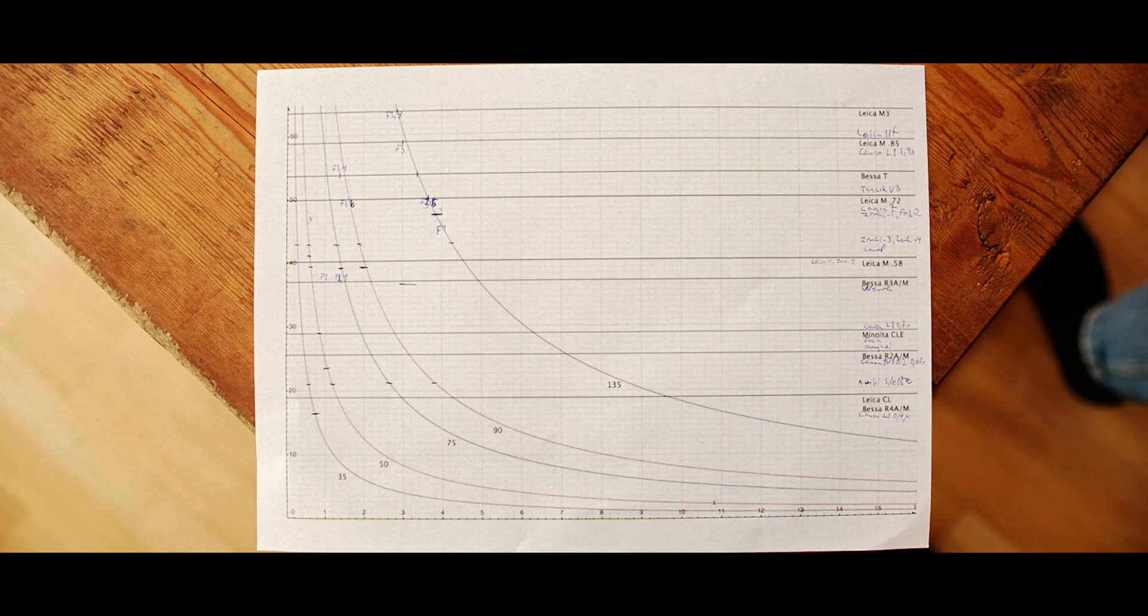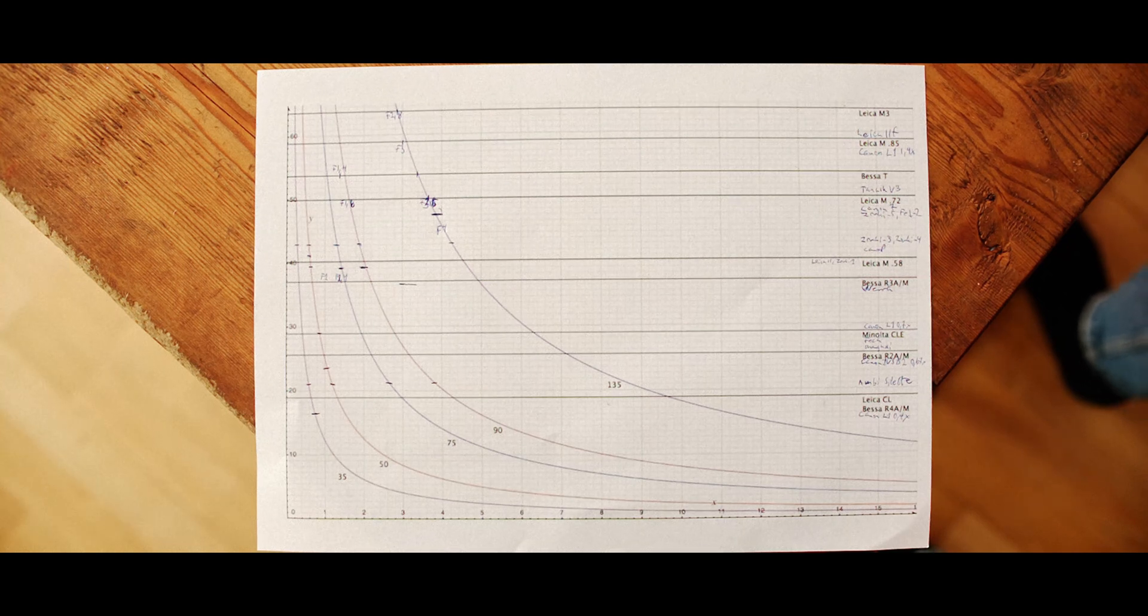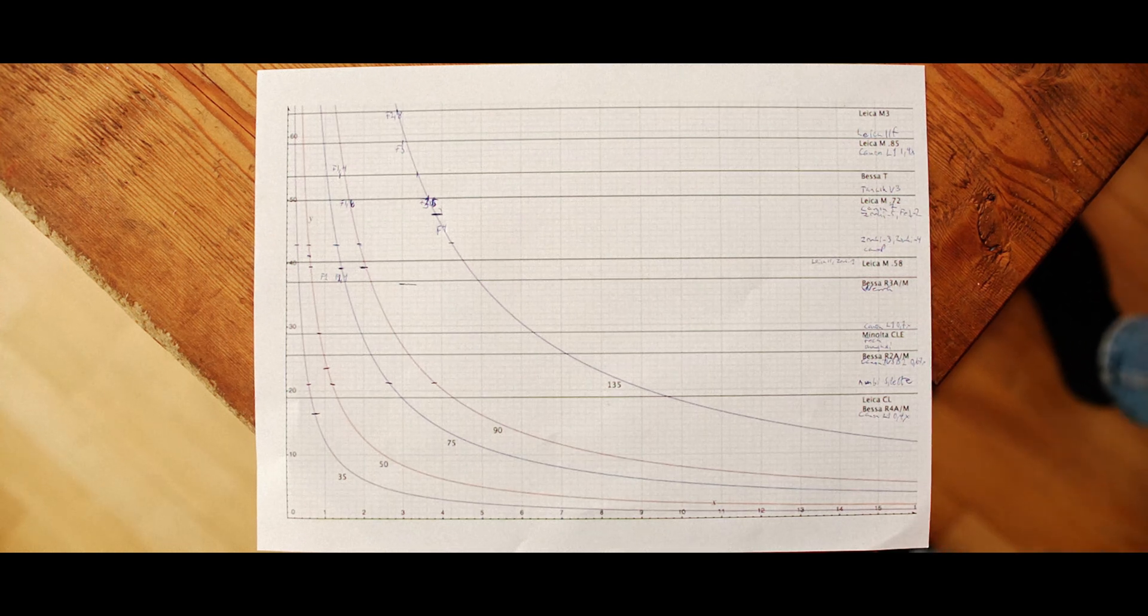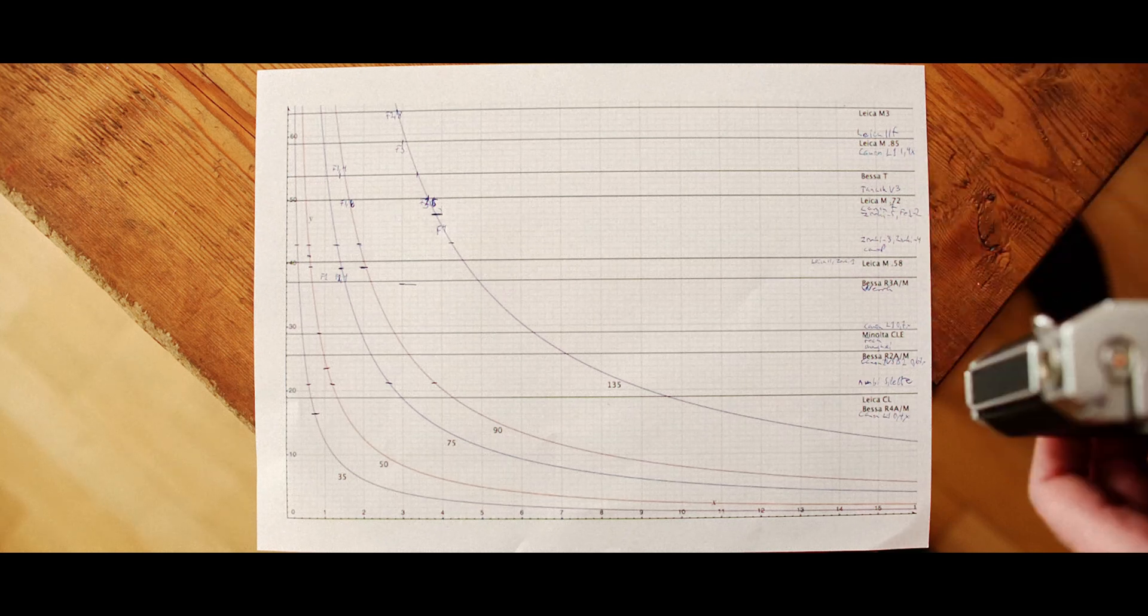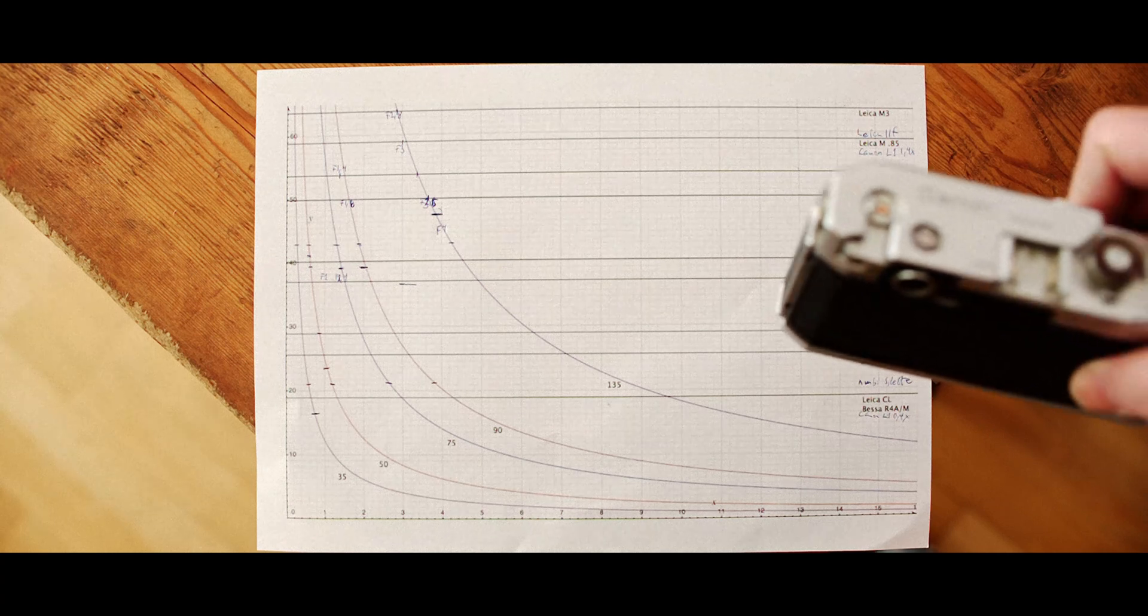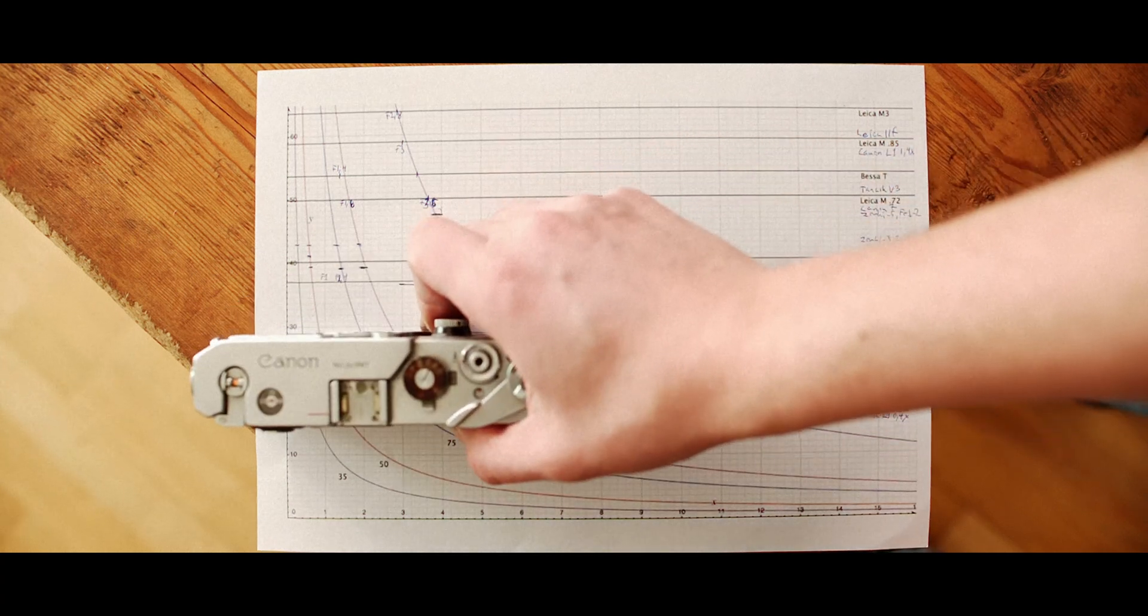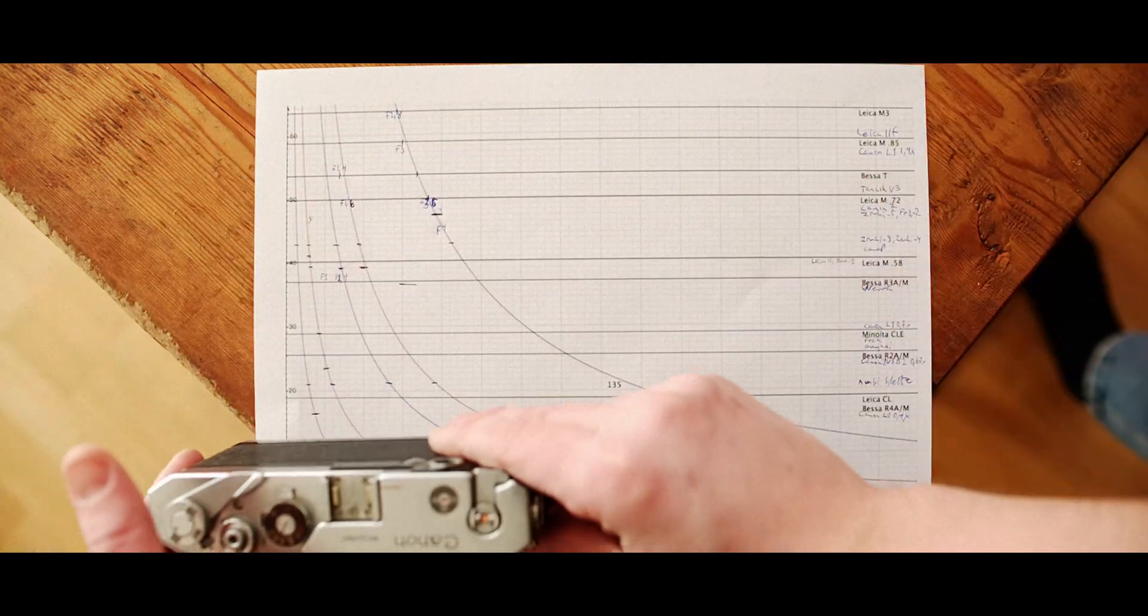And it requires perfect vision and so on. So for the cameras tested here, let's do the shortest effective base. The Canon L1 with the 35 millimeter viewfinder. That's an effective base of 16.4 millimeters. It ends up here.